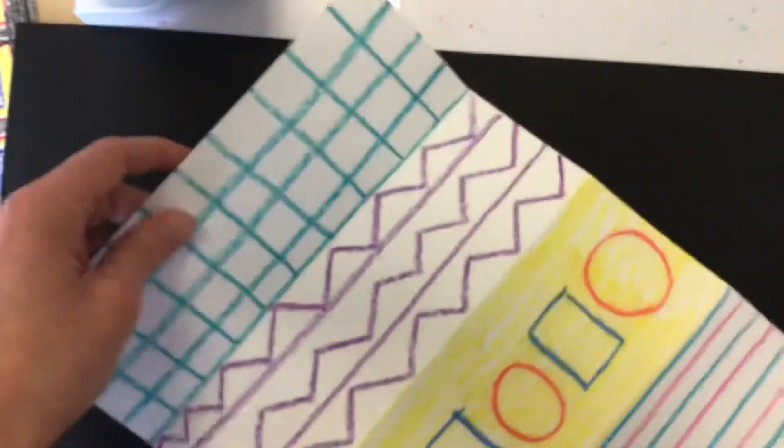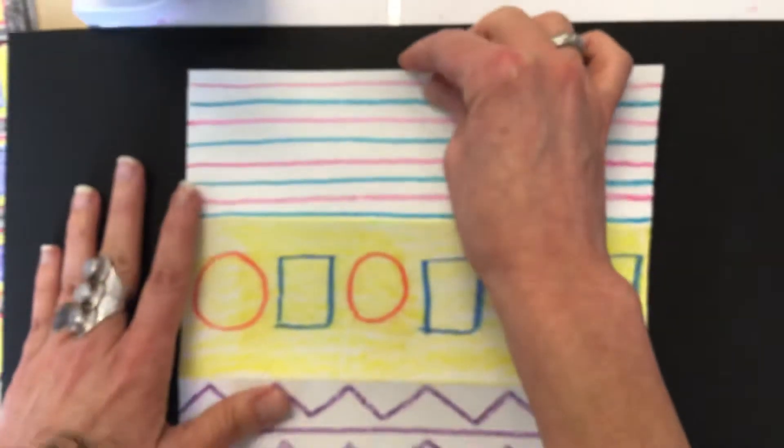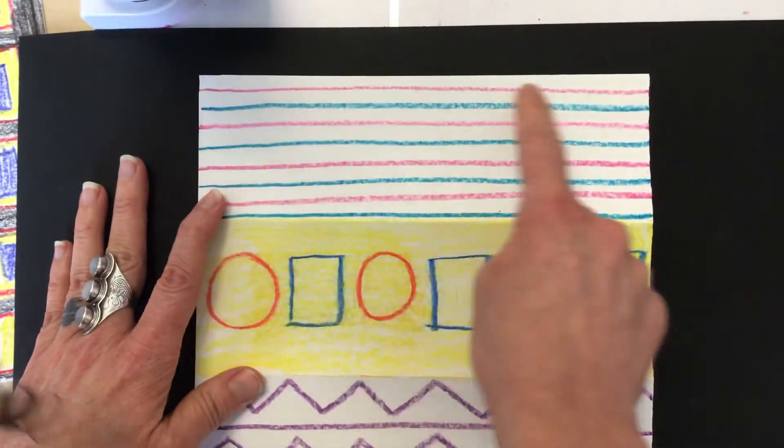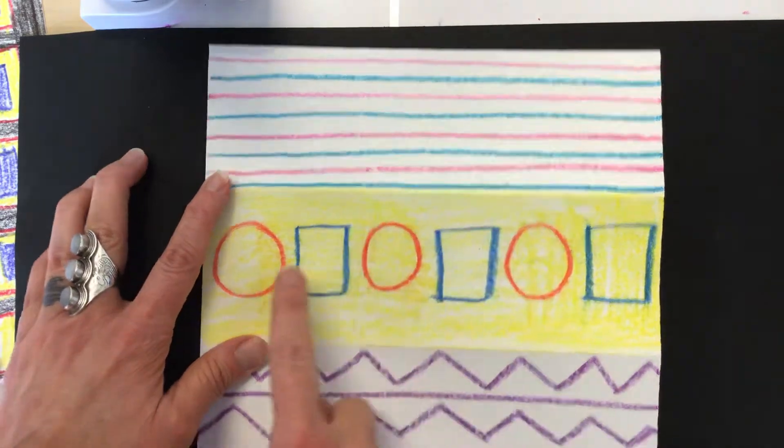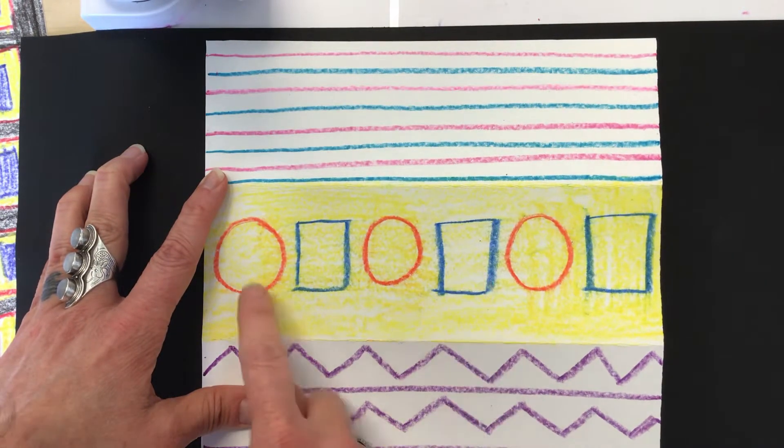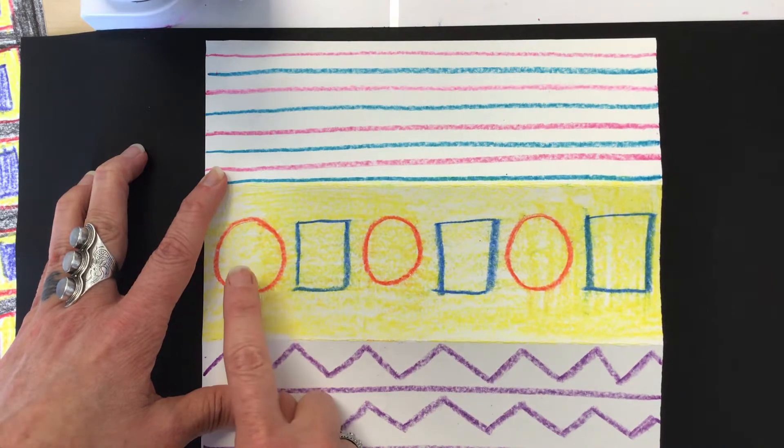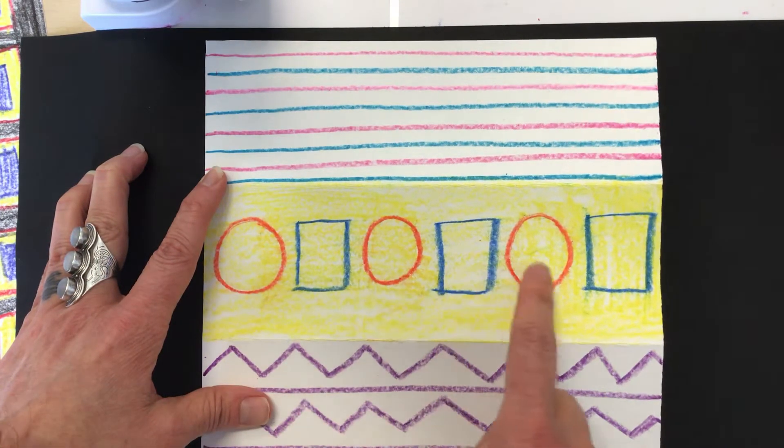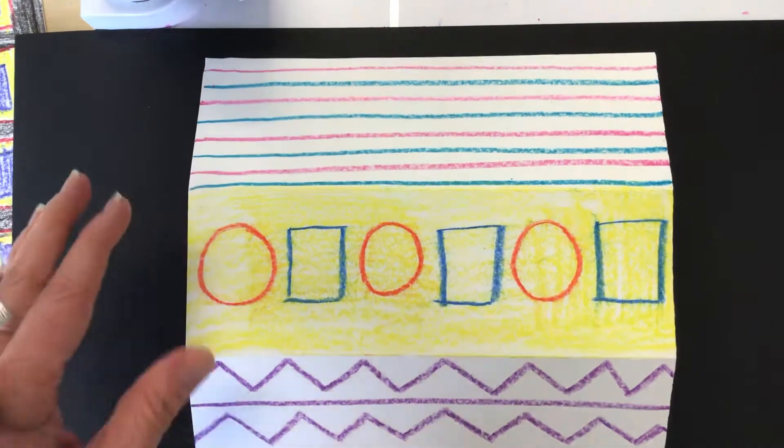Remember that a pattern is something that repeats. It might be lines that repeat. It might be shapes that repeat, or it might be colors like red, blue, red, blue, red, blue.